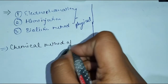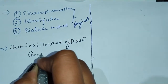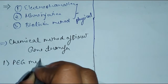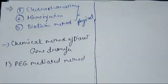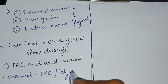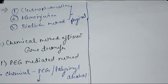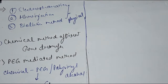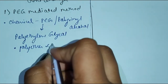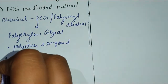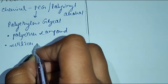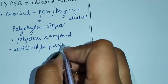Chemical methods of direct gene transfer. The first chemical method is PEG — polyethylene glycol. PEG is a polyether compound and it is utilized for protoplast fusion.